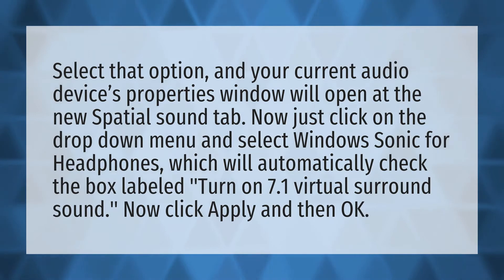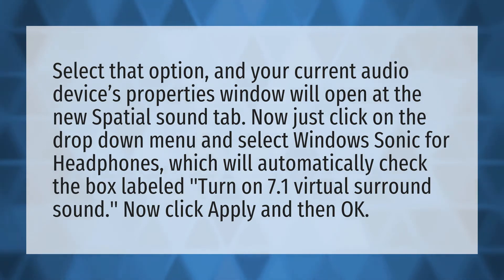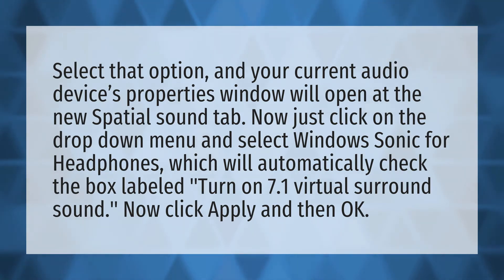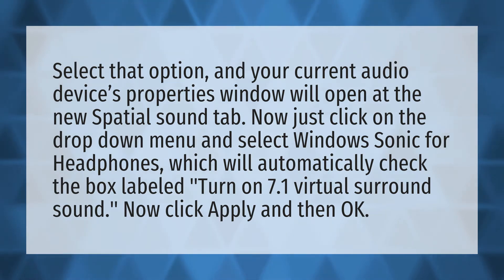Select that option and your current audio device's properties window will open at the new spatial sound tab. Now just click on the drop-down menu and select Windows Sonic for Headphones, which will automatically check the box labeled Turn on 7.1 Virtual Surround Sound. Now click Apply and then OK.